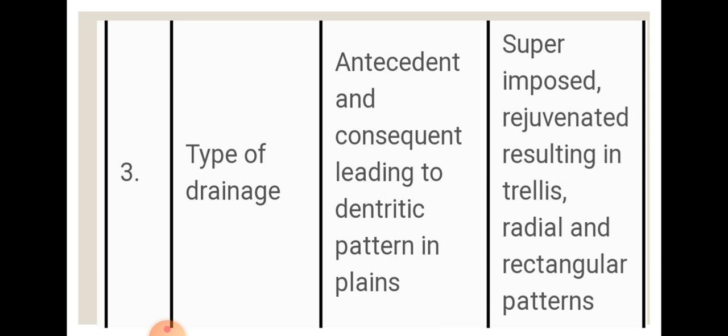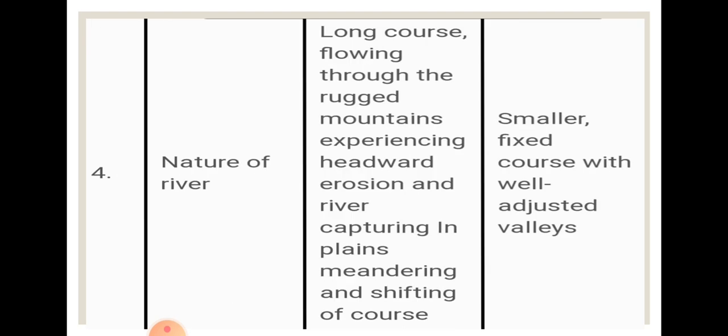Now the types of drainage. Himalayan drainage consists of antecedent drainage — that is, ancient drainage — which is consequent, leading to the dendritic drainage pattern. In case of Peninsular drainage, the rivers are superimposed rivers, and they form the trellis pattern in some places, the radial pattern in others, and the rectangular pattern elsewhere.